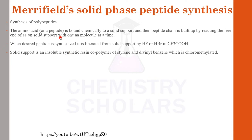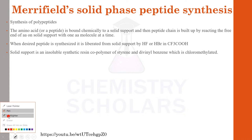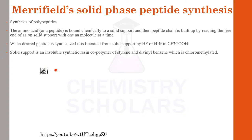Proteins or polypeptides are synthesized from amino acids. In this synthesis, we take an amino acid and block one of its sides. An amino acid has one COOH group and one NH2 group. So one side is kept free and one side is blocked. Let's say this is one amino acid with one side blocked.